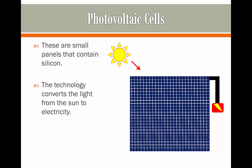What we have is a panel that contains a lot of silicon chips. As the Sun heats it up, the silicon chips convert all the energy from the light into electricity, which we can use in our house.